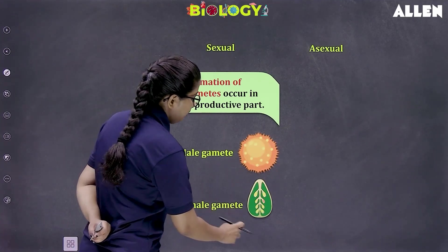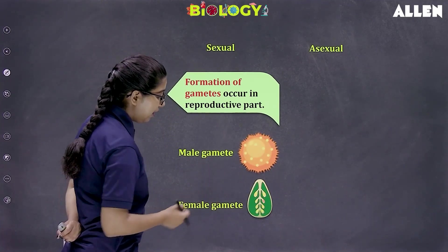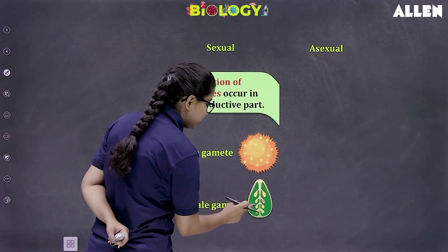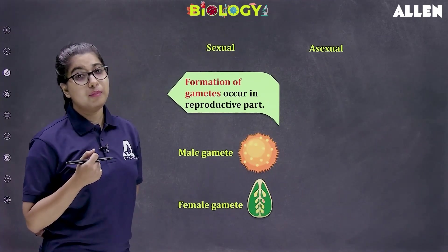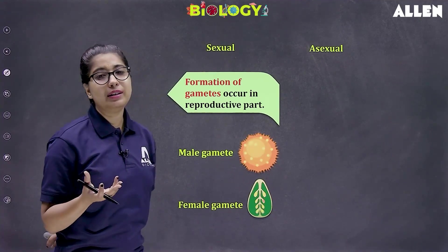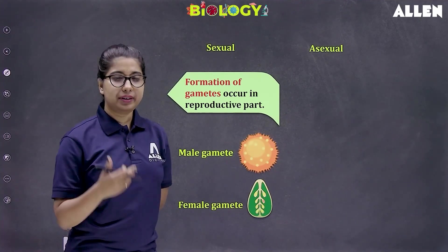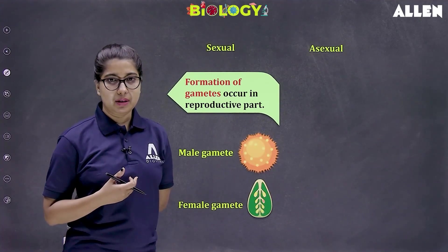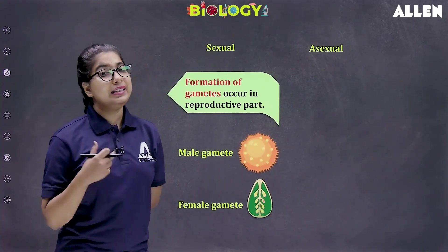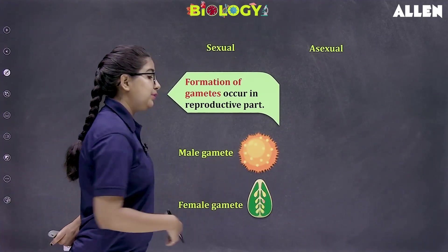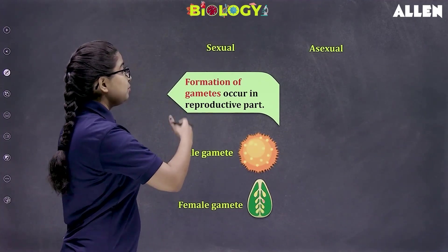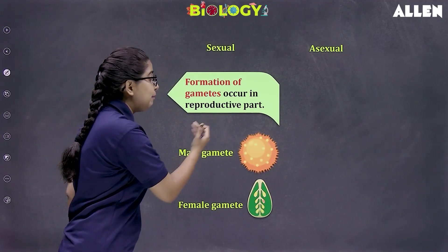This is basically the female part of the flower, and it has these bulb-like structures inside which the female gamete is formed. And this is the pollen grain — we will come to know more about it in upcoming lectures. This pollen grain contains the male gamete, and it is formed in the male part of the flower. So you can see that in sexual mode of reproduction, formation of gametes occurs.